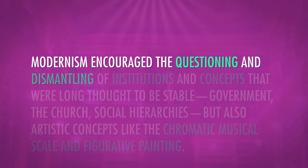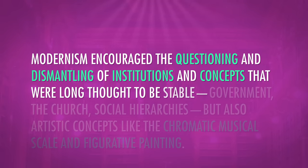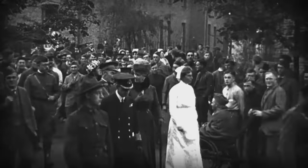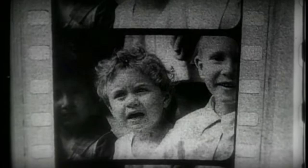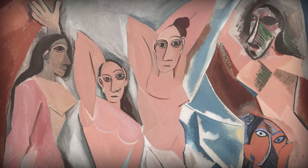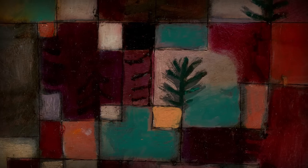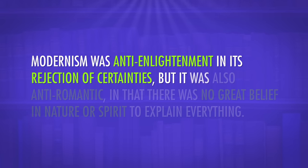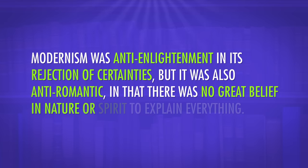So this is a modernist novel. Broadly speaking, modernism was a philosophical and cultural movement that got going in the late 19th century and reached its apex just after World War I. Modernism encouraged the questioning and dismantling of institutions and concepts that were long thought to be stable: government, the church, social hierarchies, but also artistic concepts like the chromatic music scale or figurative painting. With 40 million people dead on the World War I battlefield, it was hard to go back to the same old pictures and tunes, but also changes in technology were reshaping the role that different forms of art could play in human life. Who needs to read a book to experience a thrilling, moving picture that takes place inside your mind when you can just watch an actual movie?